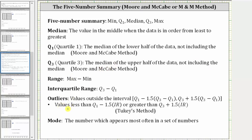For the outliers, the TI-84 uses Tukey's method, where the outliers are values less than quartile one minus 1.5 times the interquartile range, or values greater than quartile three plus 1.5 times the interquartile range, where the interquartile range is Q3 minus Q1.